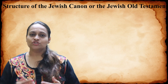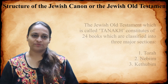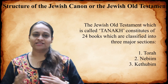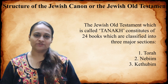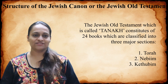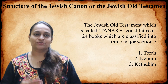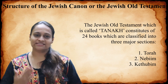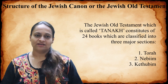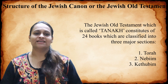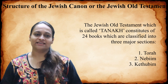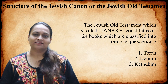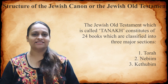The Jewish Old Testament is called Tanakh, and it consists of 24 books which are classified into three major sections. The first is Torah, the second is Nevi'im, and the third is Ketuvim.